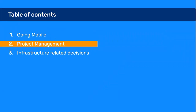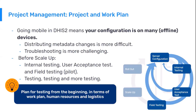Now let's focus on the project management, budget, and planning implications. All projects are different in terms of amount of resources, budget, size, and settings, but it's important to follow a guide to reduce risk and future problems. Begin by planning the testing. We divide this process in four steps: server configuration, internal testing, user acceptance tests, and field testing. All of these must be planned from the beginning in terms of work plan, human resources, and logistics.